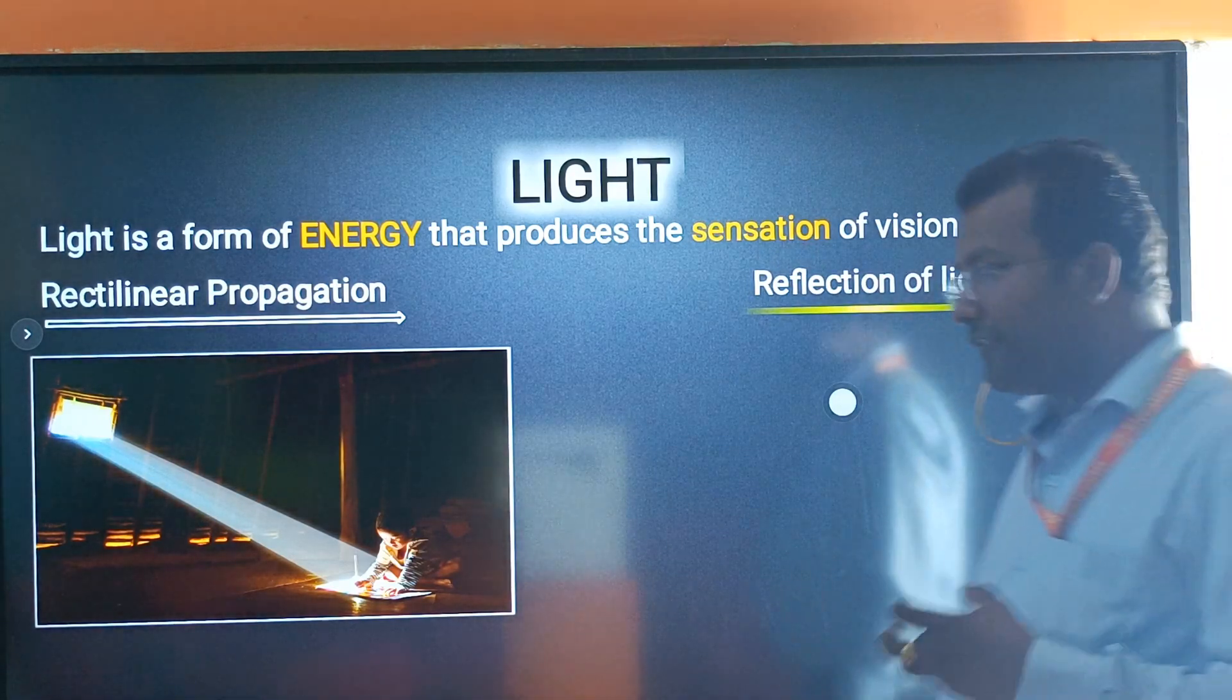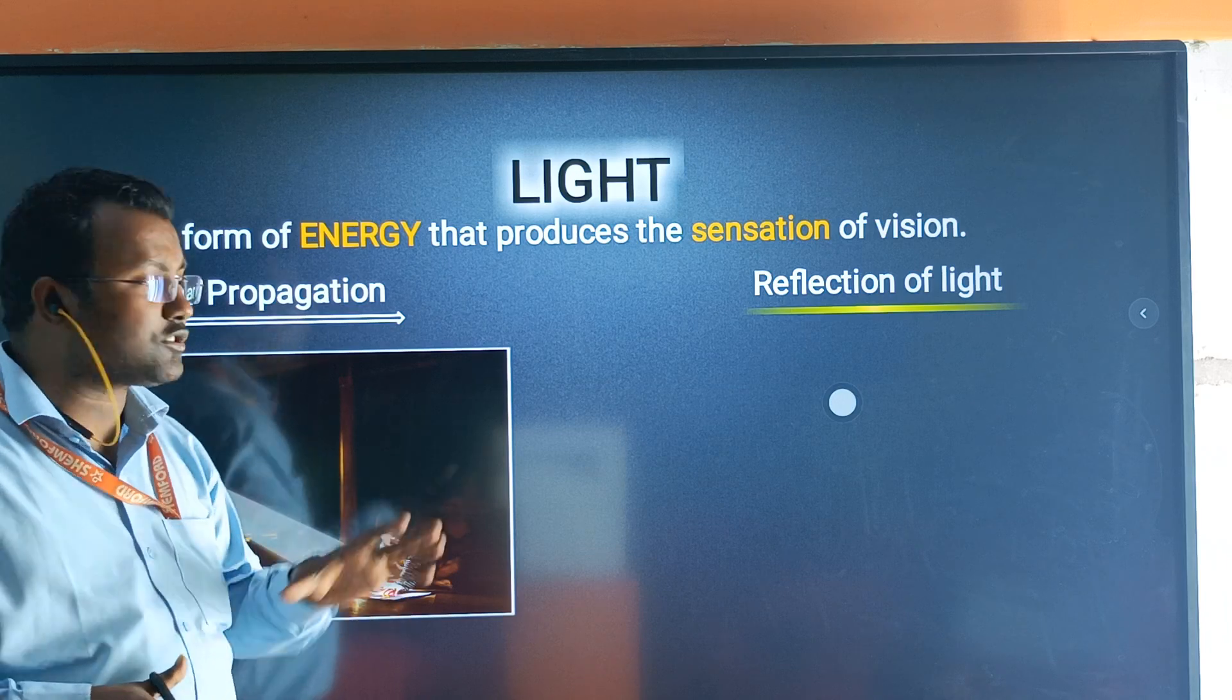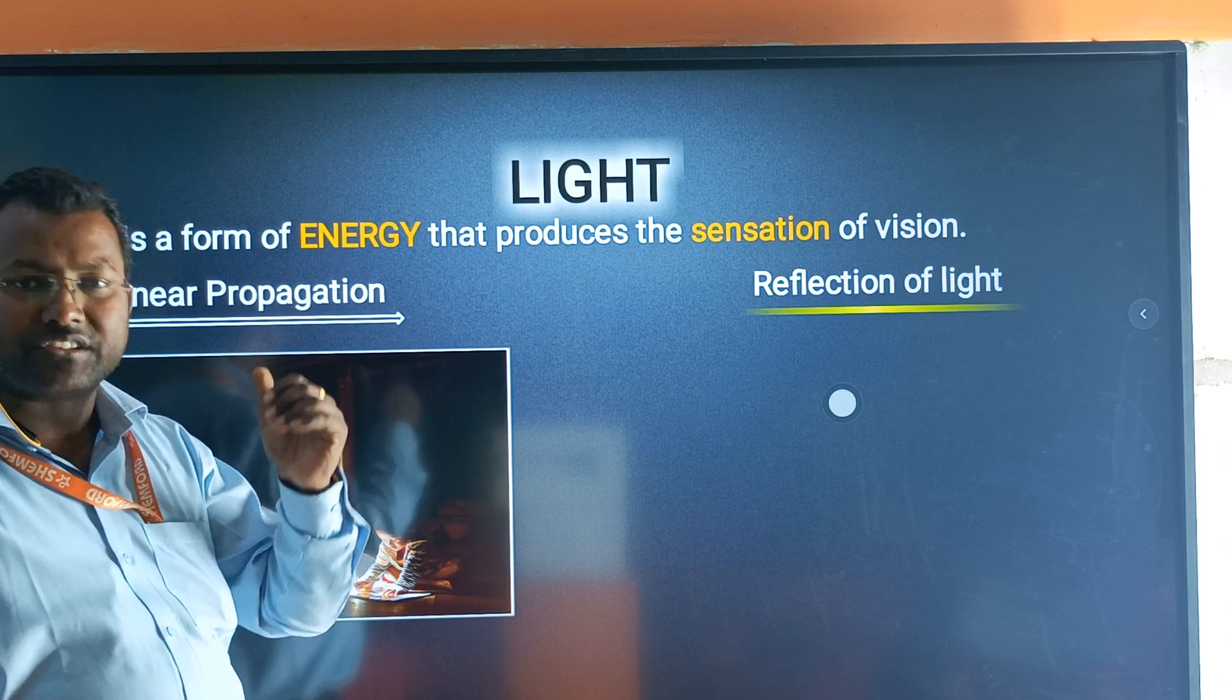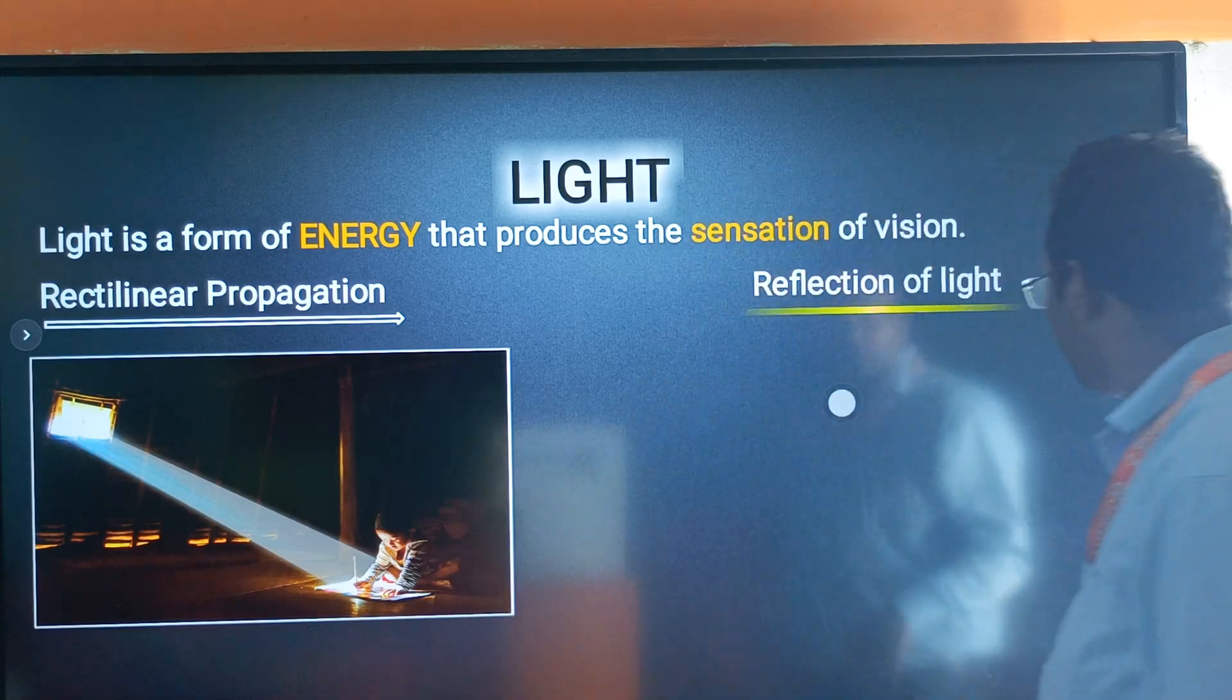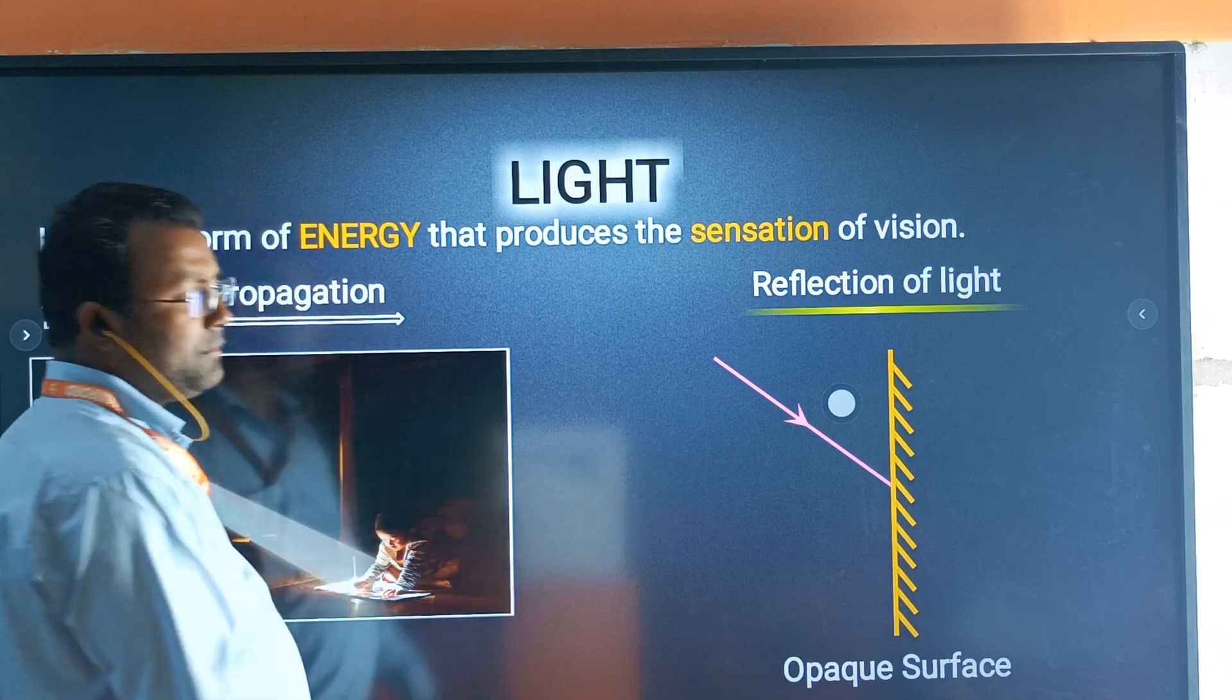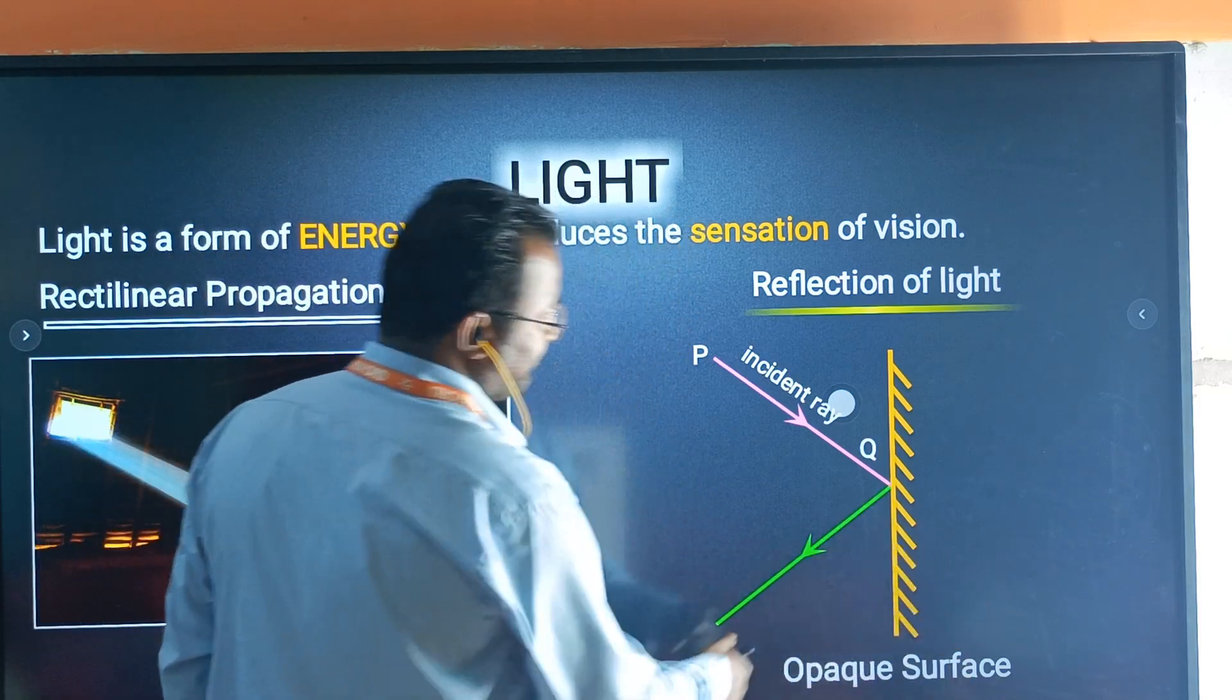Reflection of light. What is reflection? Main aap sabko aasani se deekh paa raha hoon because the light is coming to my face and reflected back. This is called reflection. Jab koi ray of light kisi surface par jaakar strike karte hain aur strike karne ke baad waapas laut jaate hain, that is called reflection of light.